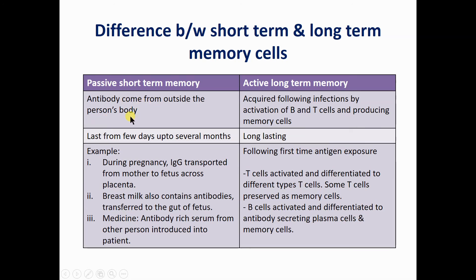Passive short-term memory only lasts from a few days up to several months. Examples of passive short-term memory start during pregnancy when the fetus is in the womb of the mother. The first type occurs by transfer of immunoglobulin G, which is transported across the placenta from the mother's immune system to the fetal immune system. This immunoglobulin entered the fetus body from the outside, making it a passive type of short-term memory.